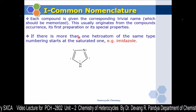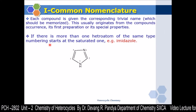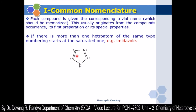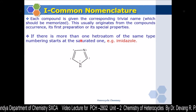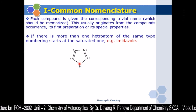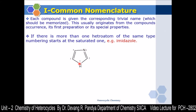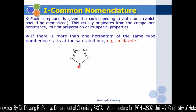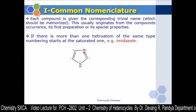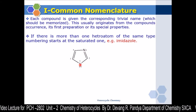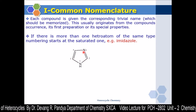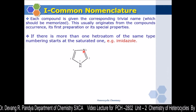If there is more than one heteroatom of the same type, numbering starts at the saturated one. For example, in imidazole there are two nitrogen atoms. One is a tertiary nitrogen and one is a secondary nitrogen. Compared to tertiary nitrogen, secondary nitrogen is more saturated, so numbering starts from that one. The second heteroatom should come closer in number, so numbering goes one, two, three, four, five.